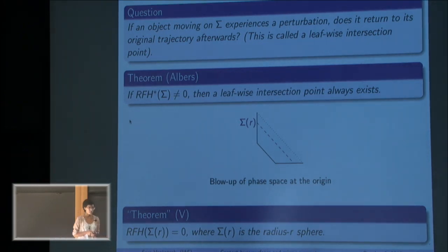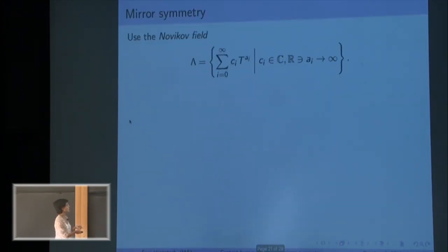And after talking with my advisor and some number theorists, I found out that I'd been working over the wrong field. I was working over C. There shouldn't be nothing wrong with C, but somehow the number theorists told me, ah no, I know what you should do. You should work over something called the Novikov field.